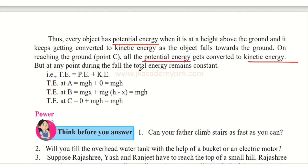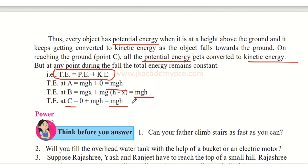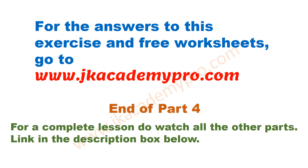At any point during the fall, the total energy is always constant: total energy = potential energy + kinetic energy. At A, kinetic energy was zero giving mgh; at B, at a certain height, again mgh; at C, potential energy was zero, again mgh. That is how we know total energy always remains constant. For answers to exercises and free worksheets, please go to jkacademypro.com.